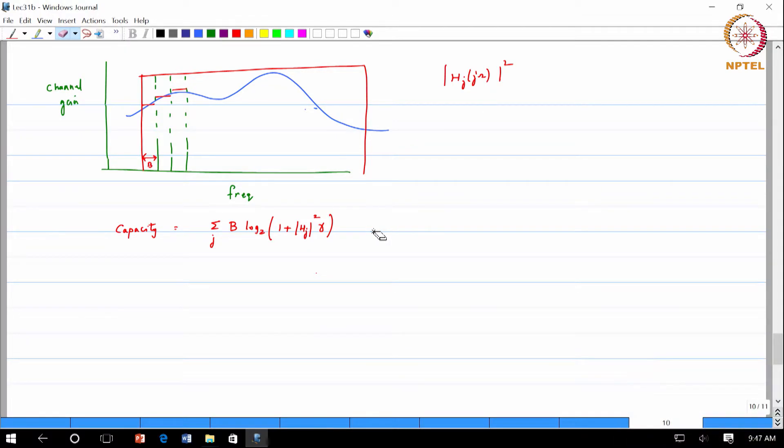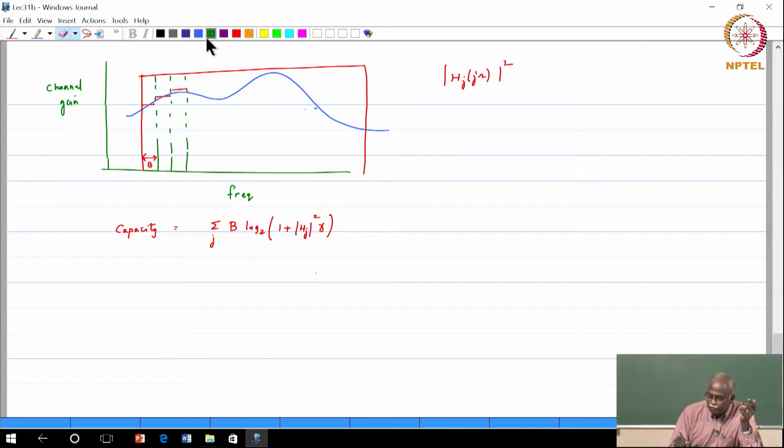So the capacity formulation now can actually be enhanced to do the following thing. So it is summation over the maximum over the power allocation of these channels, such that the summation of these power allocated to each of these sub bands is less than or equal to the total power allocation. It is not P bar, it is a total power allocation P.